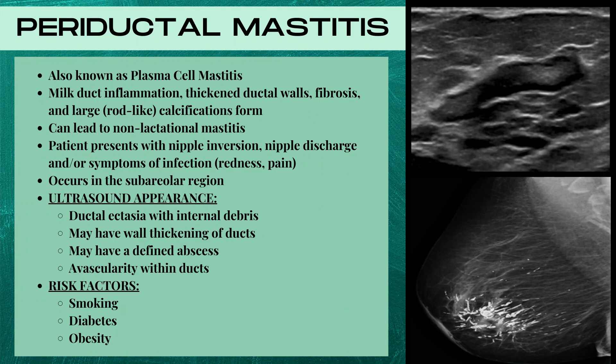Periductal mastitis, also known as plasma cell mastitis, is our next type of ductal pathology. This is when the milk duct displays inflammation, thickened ductal walls, fibrosis, and large rod-like shaped calcifications that are classically seen on the mammogram image. Since the calcifications are large, you can also see them on ultrasound, and this can lead to non-lactational mastitis. Patients present with nipple inversion, nipple discharge, and/or symptoms of infection such as redness and pain, occurring in the subareolar region. Risk factors include smoking, diabetes, and obesity. Ultrasound appearance is ductal ectasia — dilated ducts with internal debris — you may or may not see wall thickening, there may be a defined abscess or pocket of infected fluid, the ducts are usually avascular, and you may see those large rod-like calcifications.